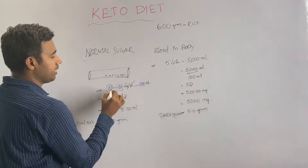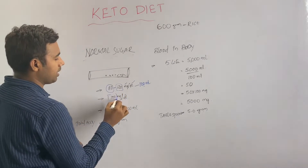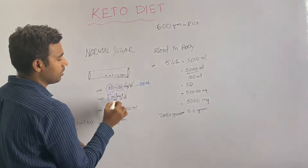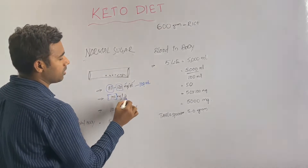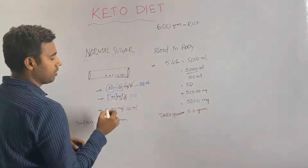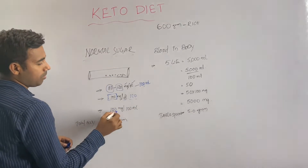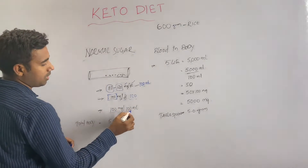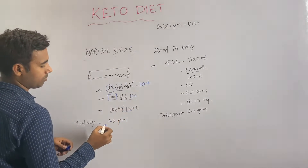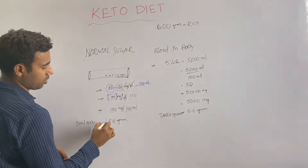The normal range is around 80 to 100 mg per deciliter. So the average is 100 mg per 100 ml.